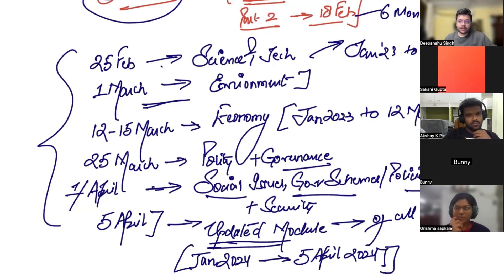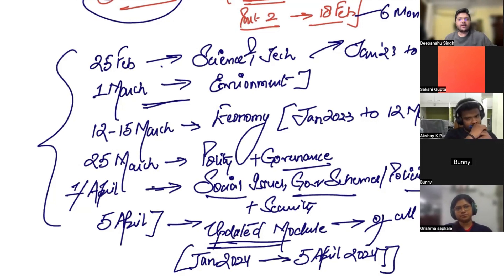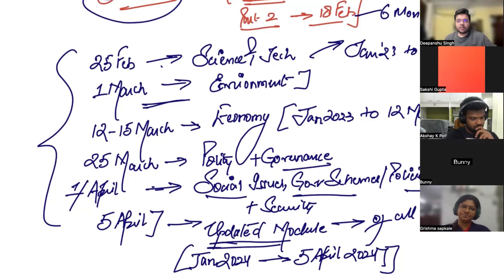This is the plan — the schedule of releasing the PDF. If you look at it, you are in a very comfortable space because you have more than one and a half months to revise again. The final compilation comes by 5th April and the exam is 26th May, so you have a full one and a half months.